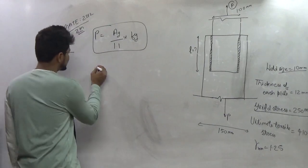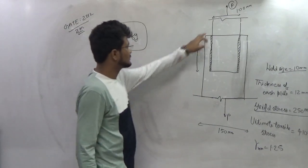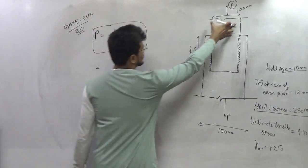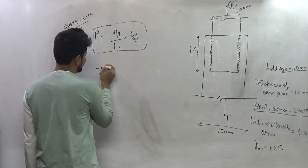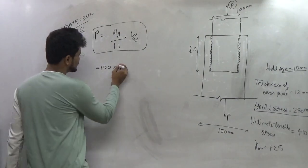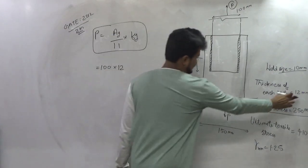So Ag is nothing but the gross cross sectional area of the particular plate which will be equal to, now the width of this plate is 100 mm into thickness will be equal to 12 mm as given in the question.